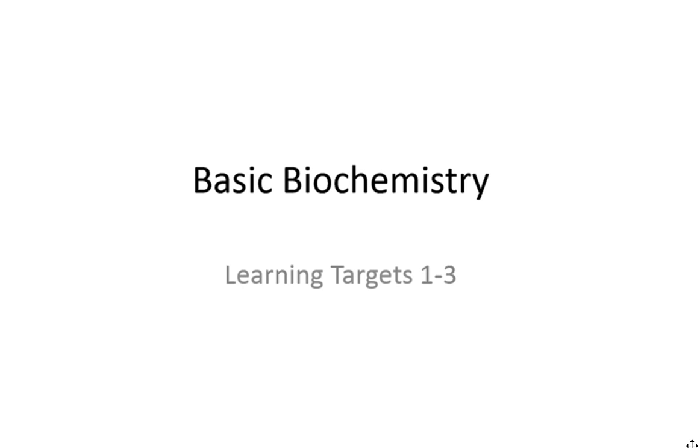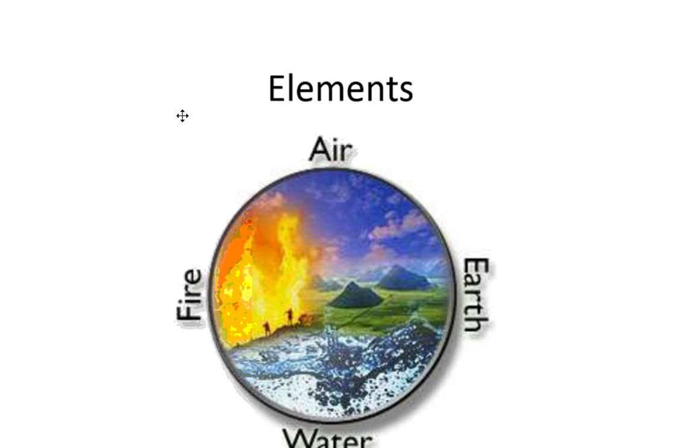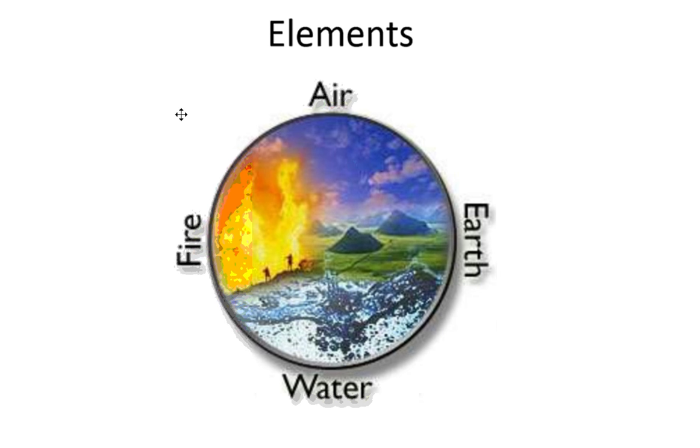This video begins Unit 2 on biochemistry, learning targets 1 through 3 on basic biochemistry. We begin by talking about elements. For years, elements were considered by scientists of the day to be earth, fire, air, and water. They would burn a piece of wood, and of course the smoke would come out of it, and it would turn to earth. The fire is coming out of it, and the sap drips, and that's the water.